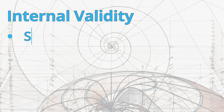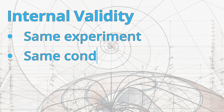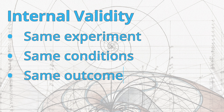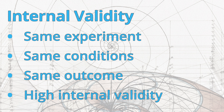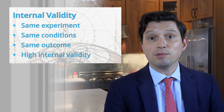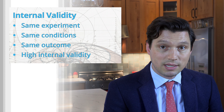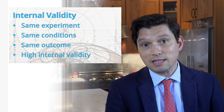This is what is referred to as a high degree of internal validity. That means that inside the laboratory, under those controlled conditions, your experiment is valid for telling you about which product is more effective. High internal validity means that under the same conditions, you are very likely to get the same results, because you have effectively isolated the relationship between the two variables you're interested in: the product and its ability to clean a stain.